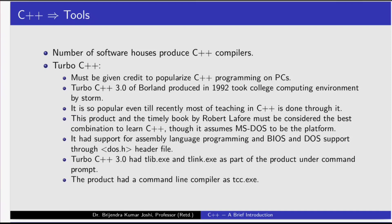A number of software houses produce C++ compilers. First is Turbo C++. This must be given credit for popularizing C++ programming on PCs. Turbo C++ 3.0 of Borland, produced in 1992, took the college computing environment by storm. It is so popular that even till recently most teaching of C++ is done through it. This product and the timely book by Robert Leffer must be considered the best combination to learn C++. It assumes MS-DOS as the platform, with support for assembly language programming, basic input output system, DOS support, and a DOS.h header file. It is to be noted that this header file is not a standard C++ header file.